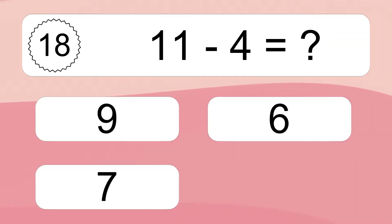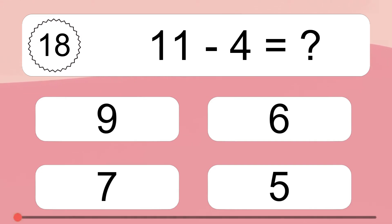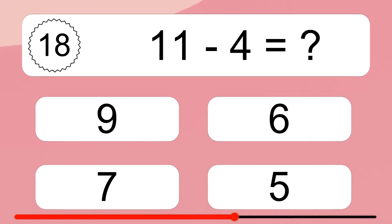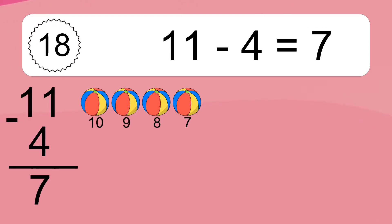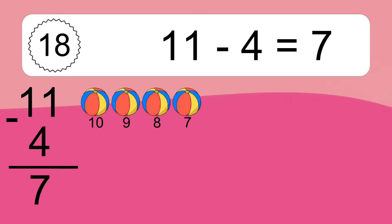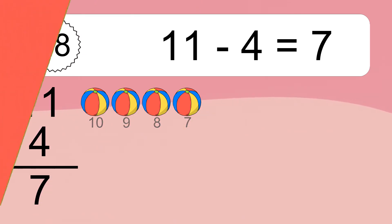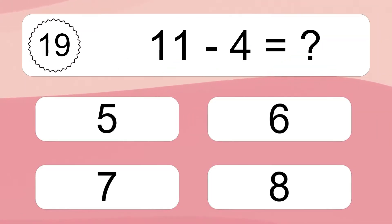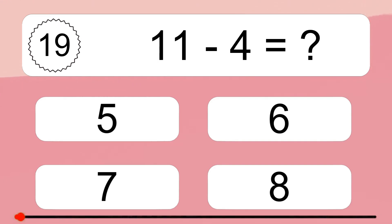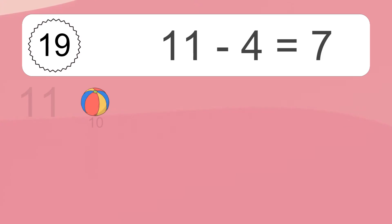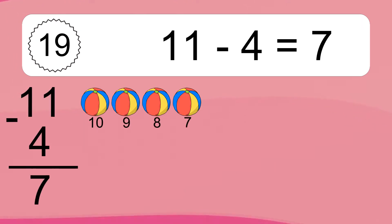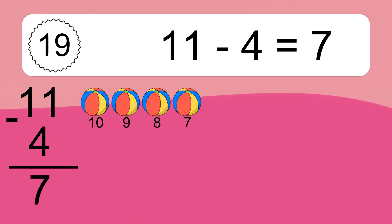11 minus 4 equals what? 11 minus 4 equals 7. Let's count it: 10, 9, 8, 7. 11 minus 4 equals what? 11 minus 4 equals 7. Let's count it: 10, 9, 8, 7.